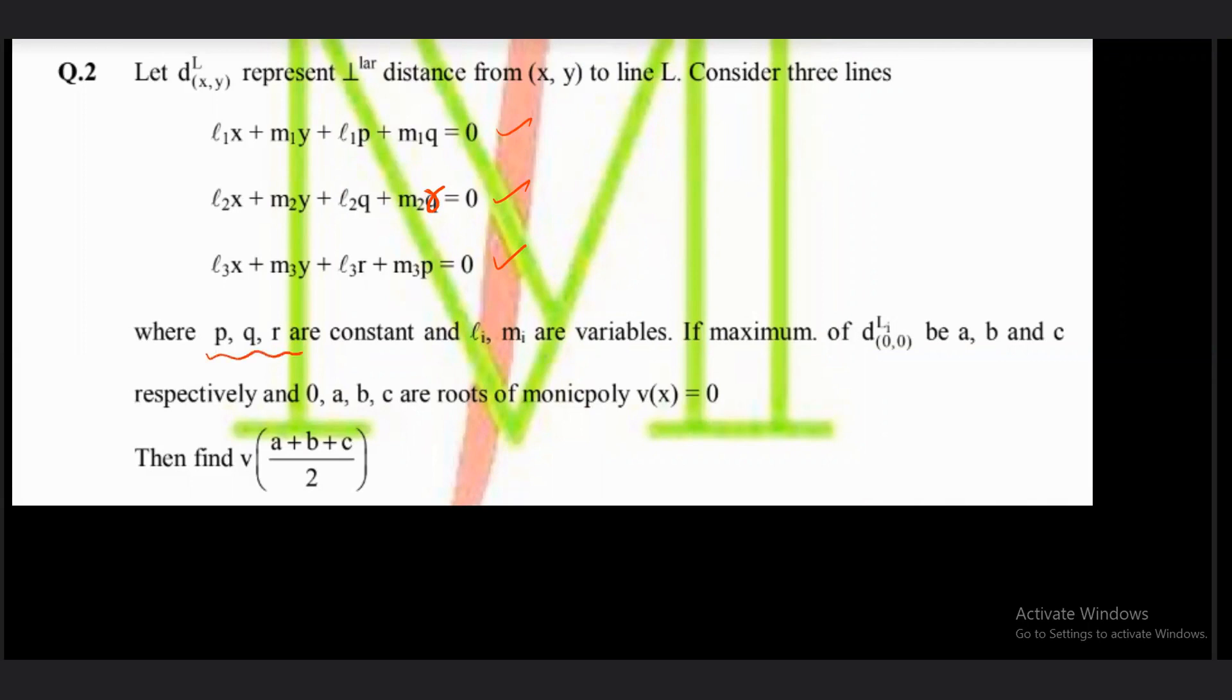p, q, r are constants and lᵢ, mᵢ are variables. If the maximum of distance of origin from line lᵢ be a, b, c respectively and 0, a, b, c are roots of the monic polynomial v(x) = 0, then find v(a+b+c)/2.